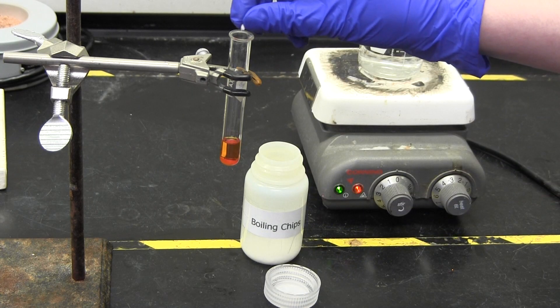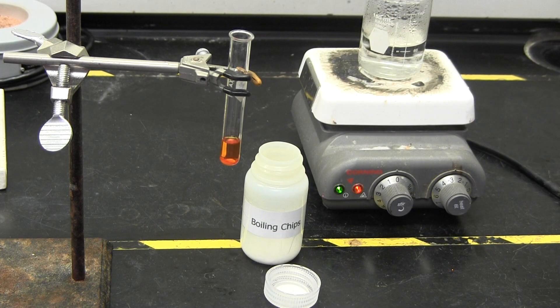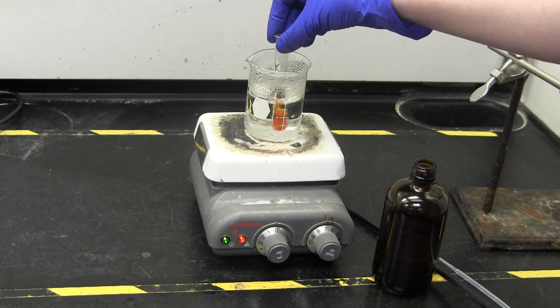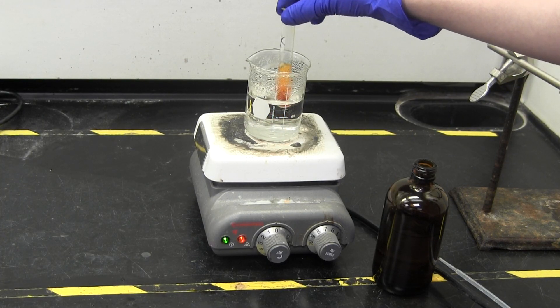Then you will put your solvent and unknown into the test tube and place it in the hot water bath. Add a boiling chip directly to the solution. Swirl the test tube and heat until the unknown fully dissolves.